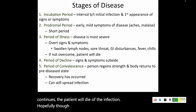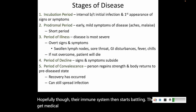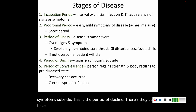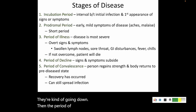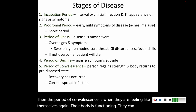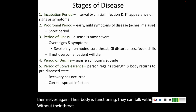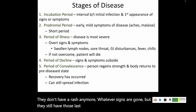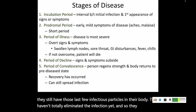Hopefully, their immune system starts battling, they get medical treatment, and signs and symptoms begin to subside — this is the period of decline. They still have signs and symptoms, but they're not as bad. Then the period of convalescence is when they are feeling like themselves again: their body is functioning, they can talk without their throat hurting, they can eat without throwing up, they don't have a rash anymore. But they still have those last few infectious particles in their body and can still spread infection.